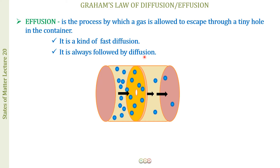Consider a deodorant spray as an example. We have a can in which there is a gas with perfume under high pressure. We press the button and the gas goes out through a tiny hole — this is effusion. Once the gas comes out into the air, it spreads naturally by the process of diffusion. So effusion is always followed by the simple process of diffusion.